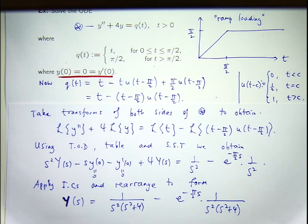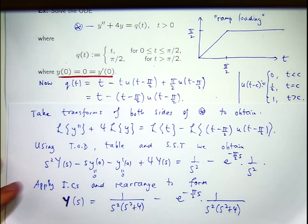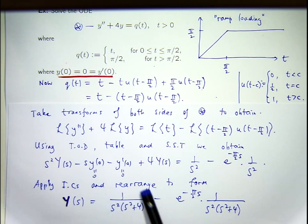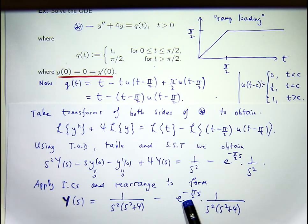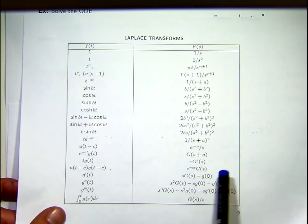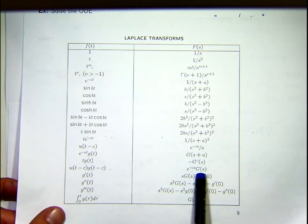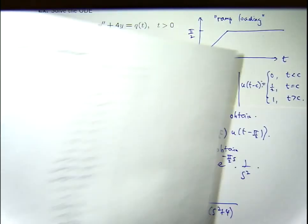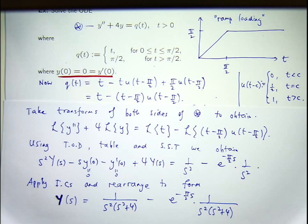How do we take the inverse transform? We've got to take the inverse transform of two terms. I can break the first one up into partial fractions — it's actually not that hard. For the second one, I've got an exponential times a function of S. Looking down the table, there's an exponential times a function of S with its inverse transform — I'm using the second shifting theorem in reverse to calculate that inverse transform.